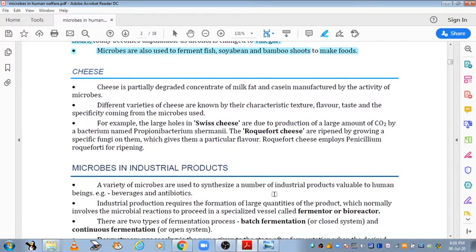Now let's talk about cheese. Cheese is a very important product that is made on commercial scale. People use it. Basically, cheese is a partially degraded concentrate of milk fat and casein manufactured by the activity of microbes. This is a partially degraded concentrate of milk fat and the protein casein. That is cheese.